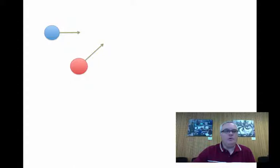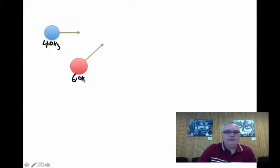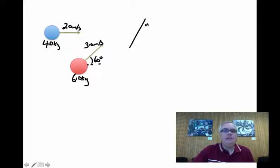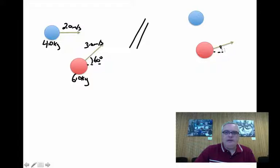Okay, let's take a look at a more complicated example. So suppose we have two masses this time. Here's a 4 kilogram mass and here's a 6 kilogram mass. And let's say the 4 kilogram mass is traveling to the right at 2 meters per second. And the 6 kilogram mass is traveling at 3 meters per second, but it's traveling at an angle of 60 degrees with respect to the horizontal. So those two objects collide. And after the collision, the 6 kilogram mass is traveling off now at an angle of 30 degrees.